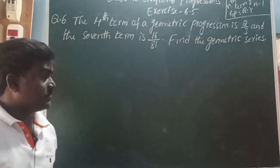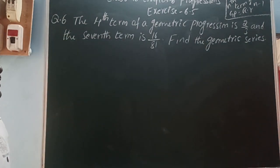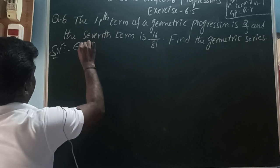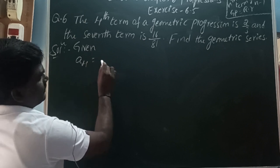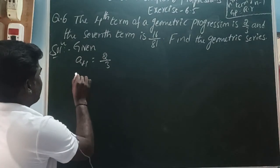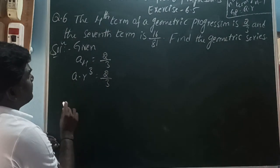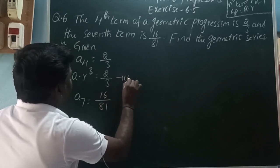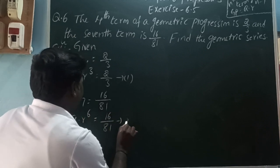Next, question 6: The 4th term of a geometric progression is 2 by 3 and the 7th term is 16 by 81. Find the geometric series. Given: 4th term is 2 by 3, so A into R cube is equal to 2 by 3. That is equation 1. The 7th term is 16 by 81, so A into R to the power 6 is equal to 16 by 81. That is equation 2.